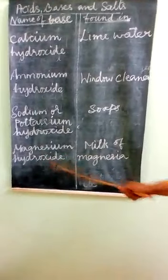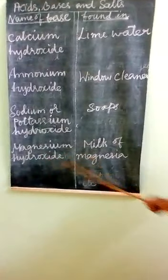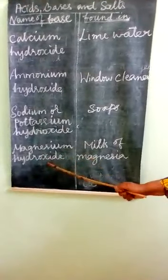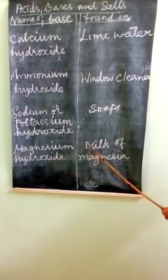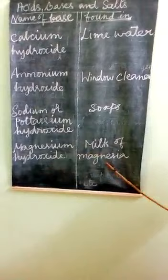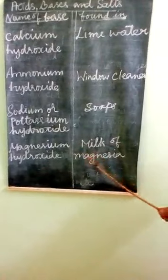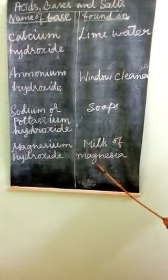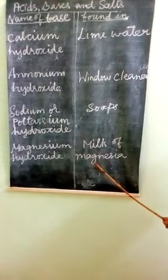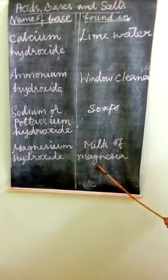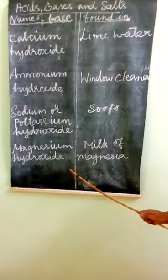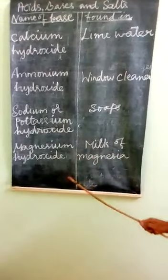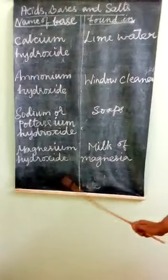We take milk of magnesia, which contains magnesium hydroxide as a base, to reduce the effect of acidity in the stomach.